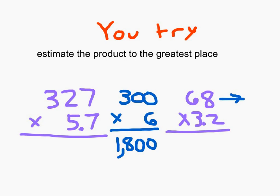68 greatest place is the tens place. 68 goes to 70. 3 and 2 tenths goes to 3. And 70 times 3 is 210, which is our estimated product for the actual answer.